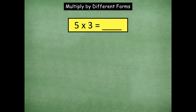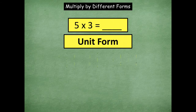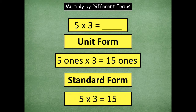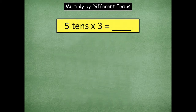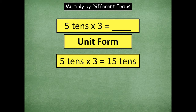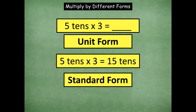Now you're going to try this one: five times three. What's the unit form of five times three? Five ones times three equals 15 ones — because it doesn't list as tens or hundreds, so it's just ones. Standard form is five times three equals 15. Now we're using the same numbers but in tens: five tens times three. The unit form is five tens times three equals 15 tens. The standard form — five tens is 50 — so 50 times three is 150.